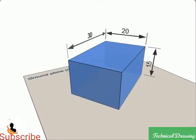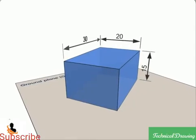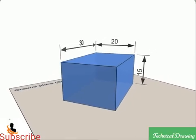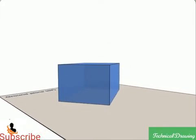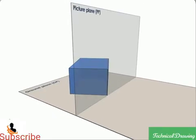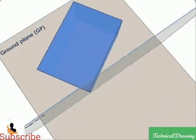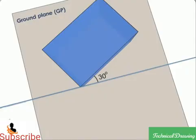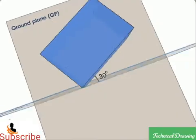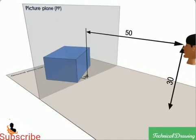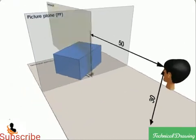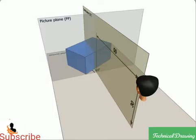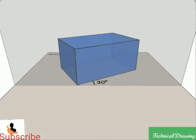A rectangular block 30mm x 20mm x 15mm is lying on the ground plane on one of its largest faces. A vertical edge is in the picture plane and the longer face containing that edge makes an angle of 30 degrees with the picture plane. The station point is 50mm in front of the picture plane, 30mm above the ground plane, and lies in a central plane which passes through the centre of the block. Draw the perspective view of the block.